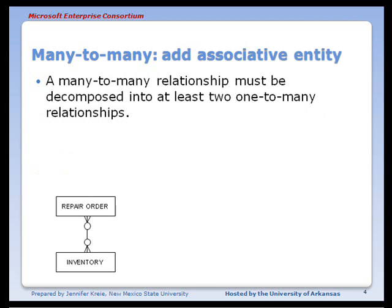So you'll have to decompose a many-to-many relationship into at least two one-to-many relationships. When I see repair order and inventory in a many-to-many relationship, I know there's going to be something else added between the two.